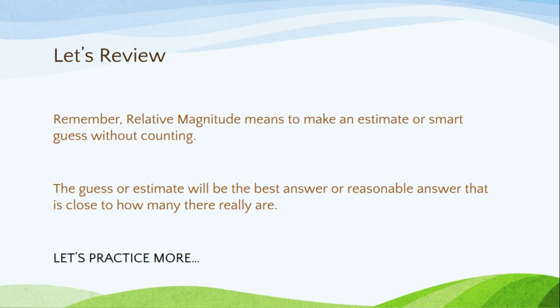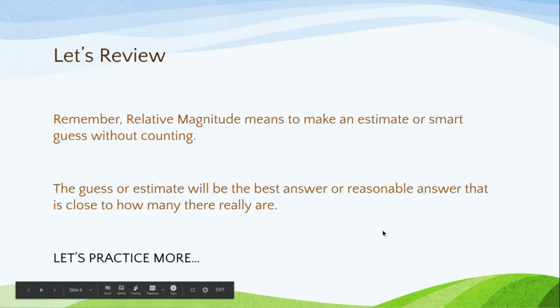Let's review. Remember, relative magnitude means to make an estimate or a smart guess without counting. The guess or estimate will be the best or reasonable answer that is close to how many there really are. You're not going to find an exact number because that would be counting — you're just doing your best guess based on the choices that you have.